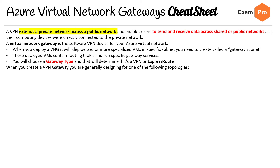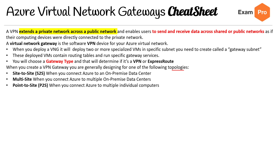When you create a VPN gateway, you are generally designing for one or more topologies. You have site-to-site, you have multi-site, you have point-to-site, and then you have VNet-to-VNet.